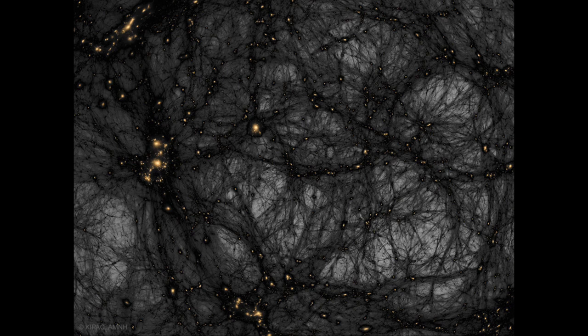While ordinary matter was still spread pretty much uniformly, dark matter was able to start condensing and forming pockets. And those have become the structures we see in the universe today.